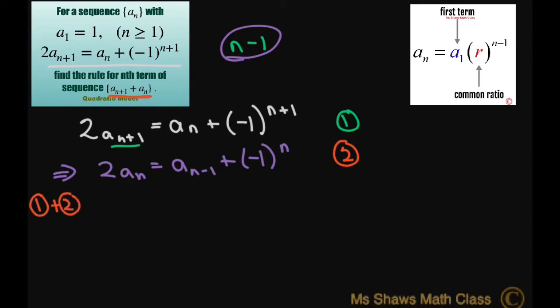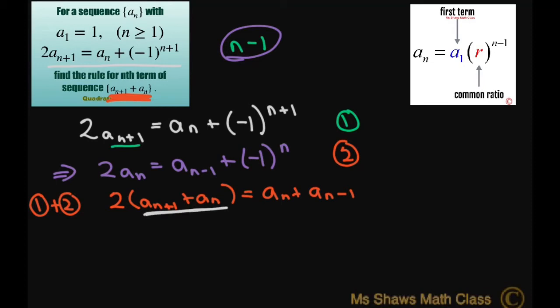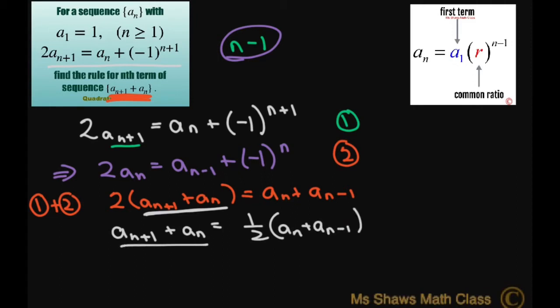On the left-hand side, I'm going to have 2 times a sub n plus 1 plus a sub n. On the right-hand side, I'm going to have a sub n plus a sub n minus 1. Solving for this gives a sub n plus 1 plus a sub n equals one half times a sub n plus a sub n minus 1.